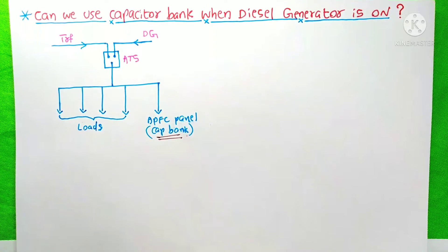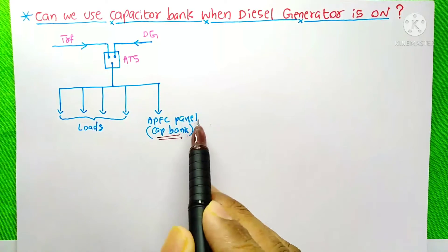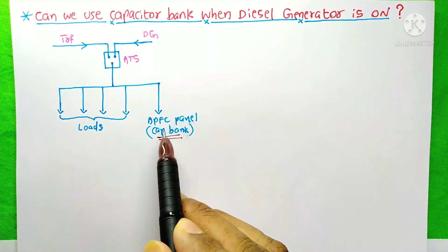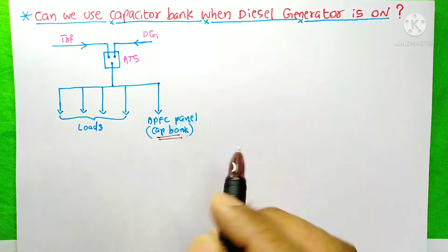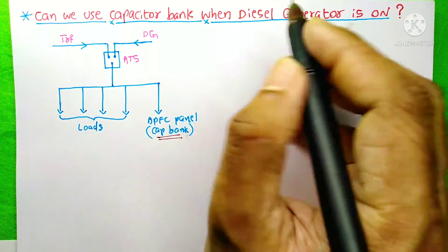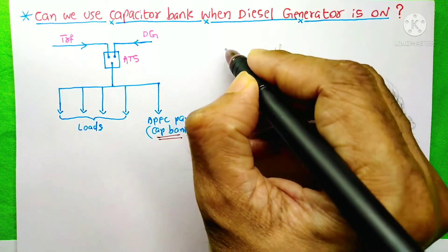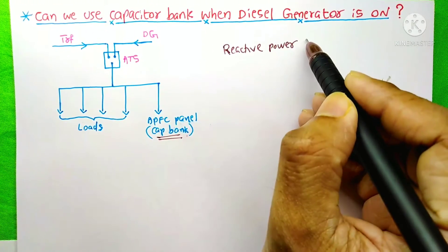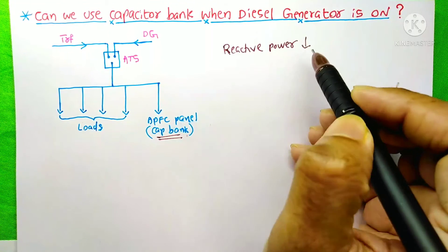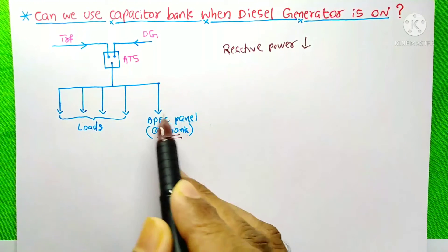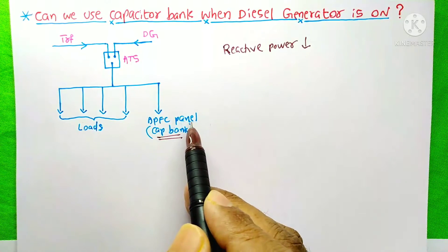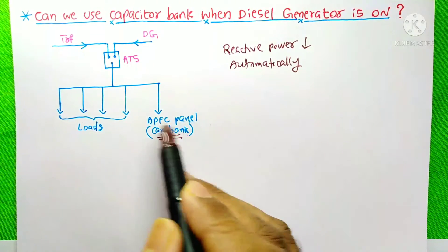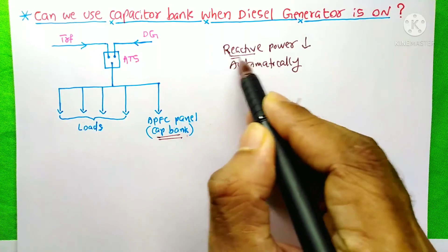First of all, I want to give you a brief description about this APFC panel. For what purpose are we using this capacitor bank? We are using it for providing reactive power to the loads. Whenever the reactive power on our system comes down, the capacitor bank — that means the APFC panel — gets switched on automatically and provides reactive power to our loads.